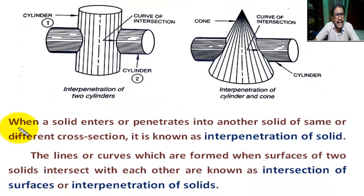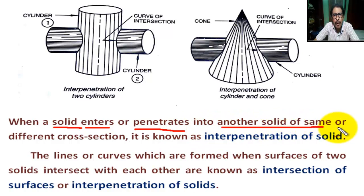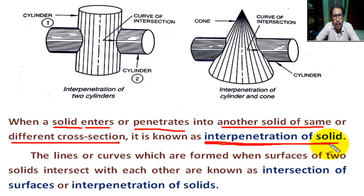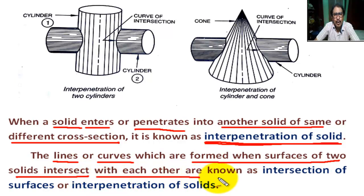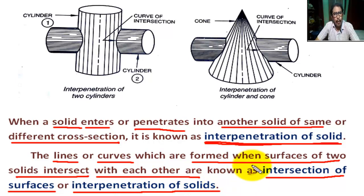So when a solid enters or penetrates into another solid of the same or different cross-section, it is known as interpenetration of solids. The lines or curves which are formed when the surfaces of two solids intersect with each other are known as intersection of surfaces or interpenetration of solids.